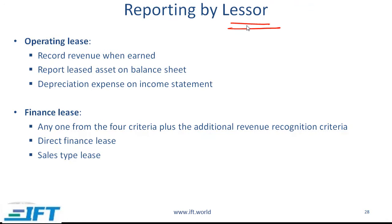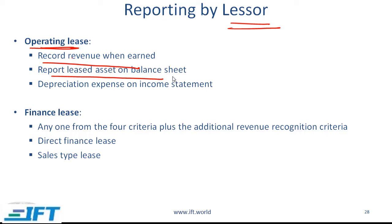Now we move to the lessor side — everything discussed so far was from the lessee's perspective. With an operating lease, the lessor records revenue when earned, which is the lease payments received. The leased asset remains on the balance sheet of the lessor. The income is essentially rent on that asset, and the expense is depreciation of that asset.